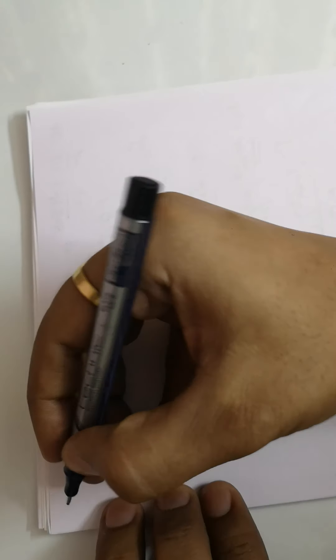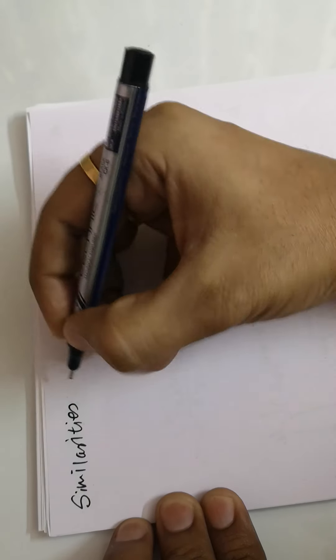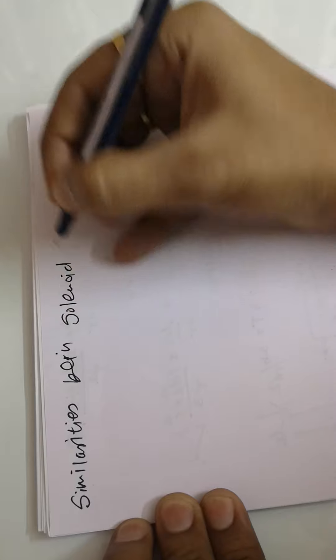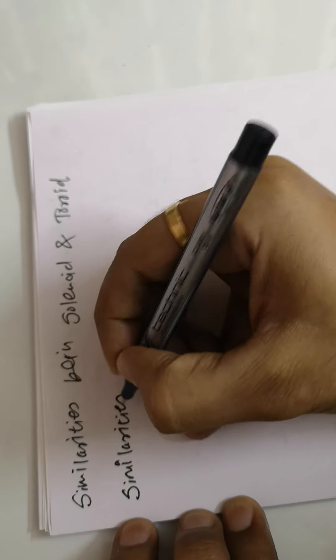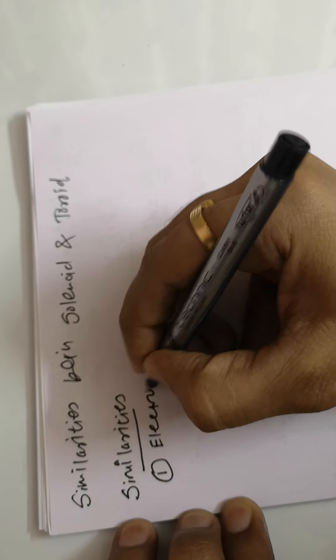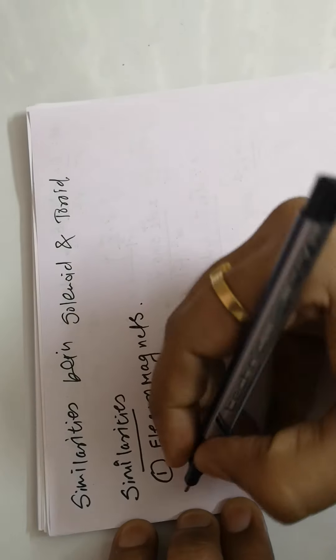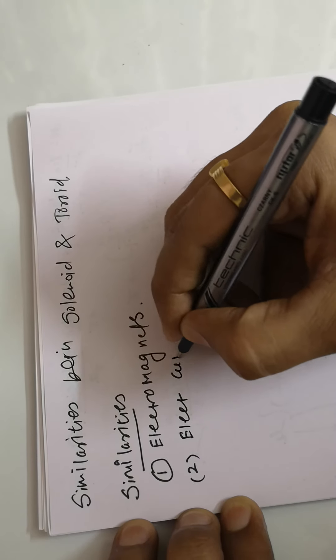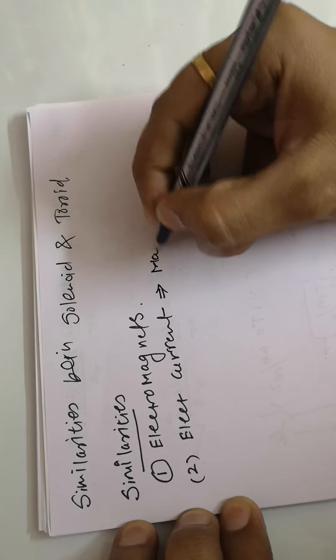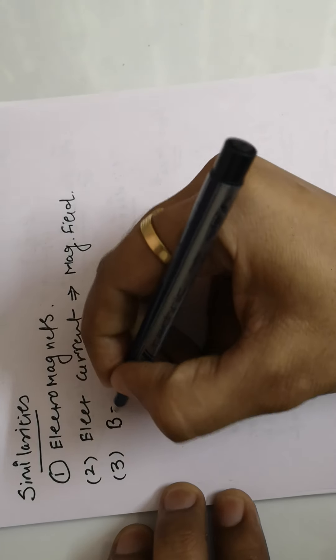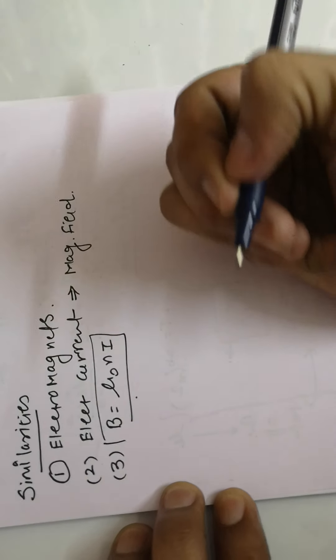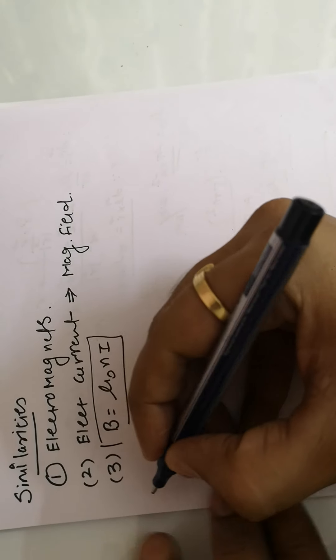There may be a question in your mind about the primary differences between a current-carrying loop, solenoid, and toroid. Let's first discuss the similarities between solenoid and toroid. First, both are electromagnets. Second, both require an electric current to produce a magnetic field. Third, both contain the same formula: B = μ₀nI (or μnI). These are the primary similarities between solenoid and toroid.